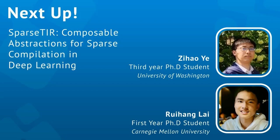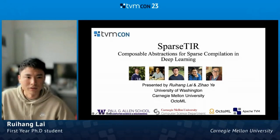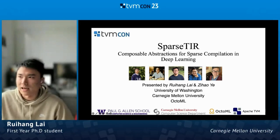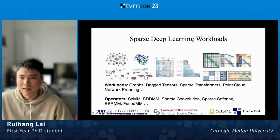I'll pass it to you, Ruoheng. Today, together with Zahao, we are very happy to introduce Sparse TIR, a composable abstraction for sparse compilation in deep learning here at TVM. This work is a collaboration between the University of Washington, Carnegie Mellon University, and OctoML.